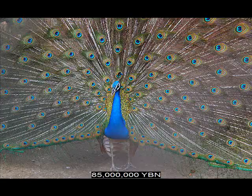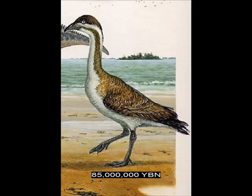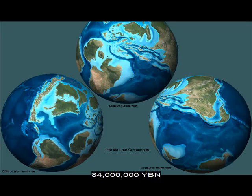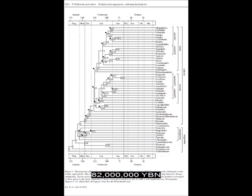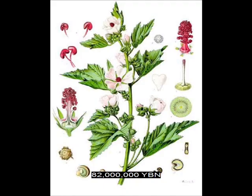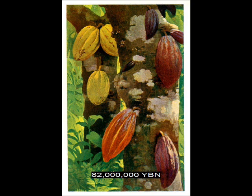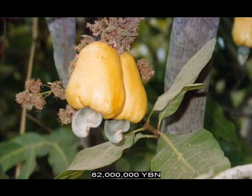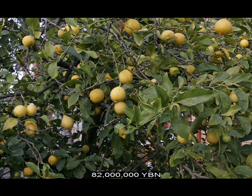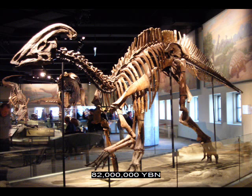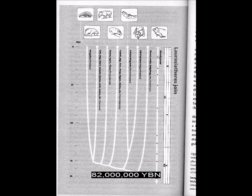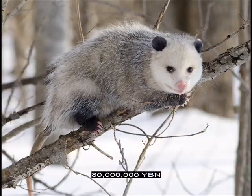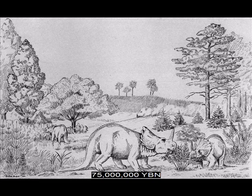Birds galliformes evolve: chicken, turkey, pheasant, peacock, quail. Birds anseriformes evolve — ancestor of waterfowl: ducks, geese, and swans. The ancestor of all placental mammals, Laurasiatheria, evolves. The Rocky Mountains start to form. Rosids malvales evolve — ancestor of okra, marshmallow, durian, cotton, balsa, and cacao. Rosids sapindales evolve — ancestor of maple, lychee, mahogany, cashew, mango, pistachio, and the citrus trees: orange, lemon, and grapefruit. Ornithopods hadrosaurs — duck-billed dinosaurs. Laurasiatheria insectivora evolves: shrews, moles, hedgehogs. Theropods dromaeosaurs evolve — raptors. Marsupials — new world opossums. Ceratopsian dinosaurs are common. Afrotheria — aardvark. Laurasiatheria carnivora: cats, dogs, bears, weasels, hyenas, seals, walruses.